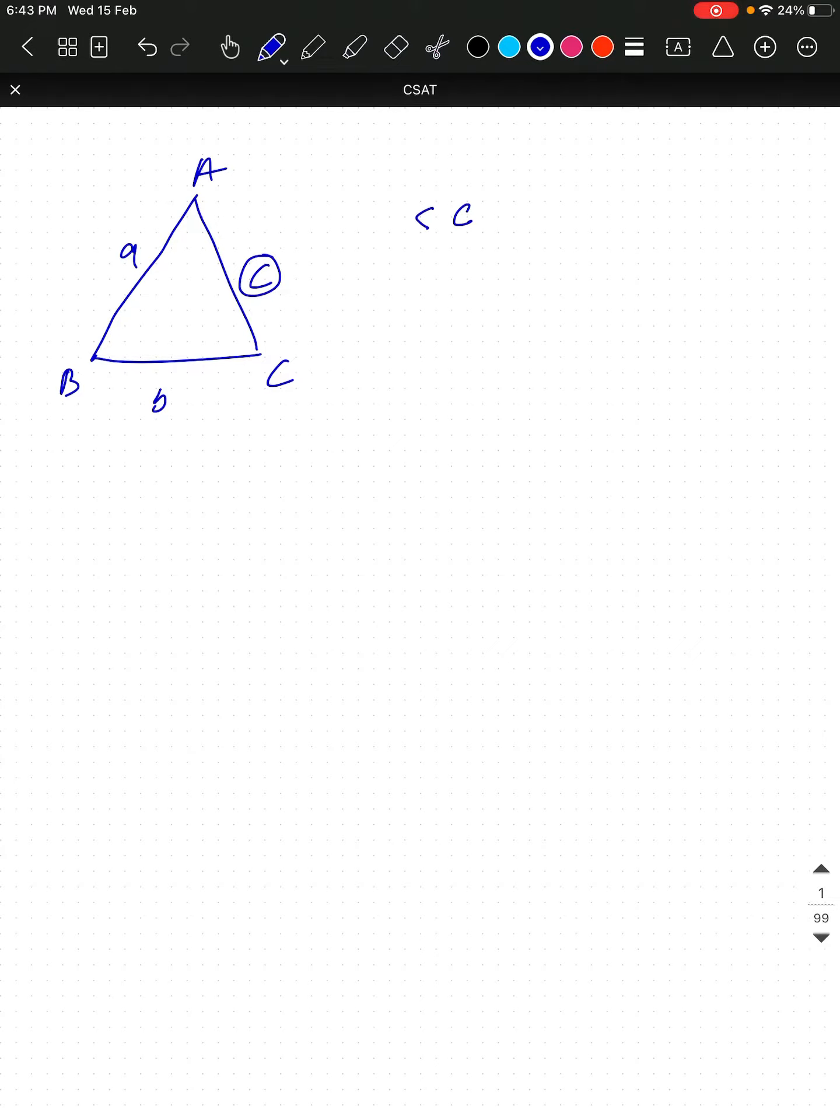Any side must be smaller than the sum of the other two sides. For example, side c must be less than a+b. Also, any side must be greater than the difference of the other two sides. So c is greater than |a-b|, and c is smaller than a+b. This is the condition for a triangle to be possible.